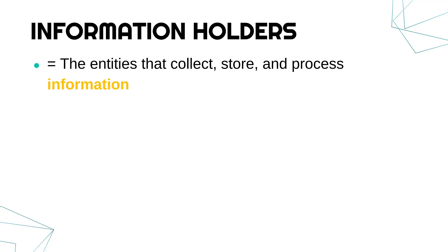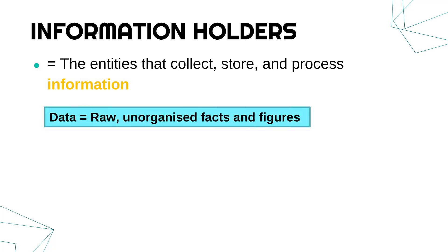Before we look at the seven categories, I want to talk about the difference between data and information. This comes along later in the course and we'll come back to it, but I feel like we're going to mention these two words so often, it's important you are aware of the difference early on.